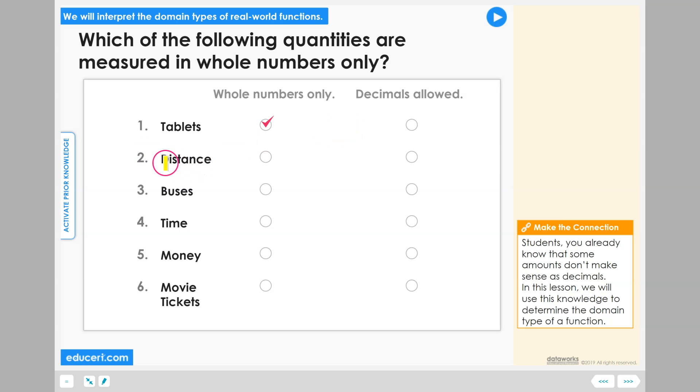Number two, distance. We can have one yard, two yards, three yards, but we can also have in-between amounts as well, like one-and-a-half yards would make sense. Other distances, such as miles, we can always have decimal amounts of miles. We can walk one-and-a-half miles or three-and-a-half miles. So distances are quantities that we can measure with decimals allowed.